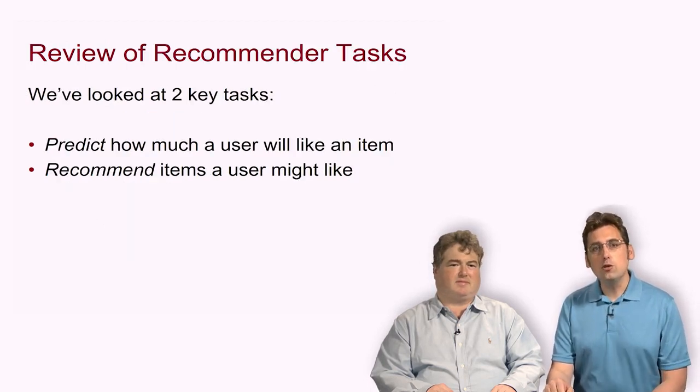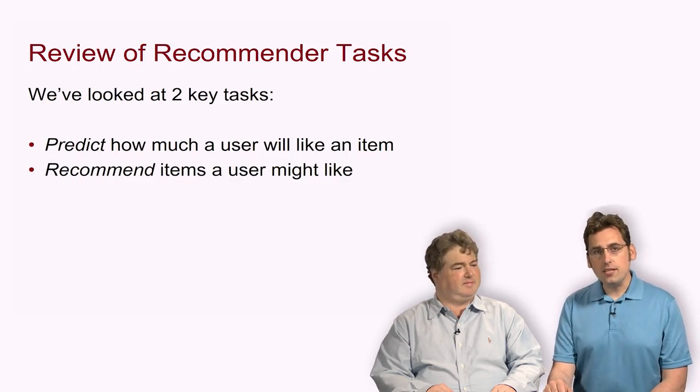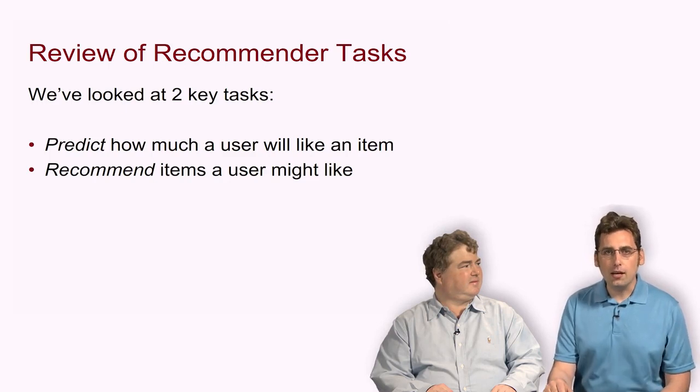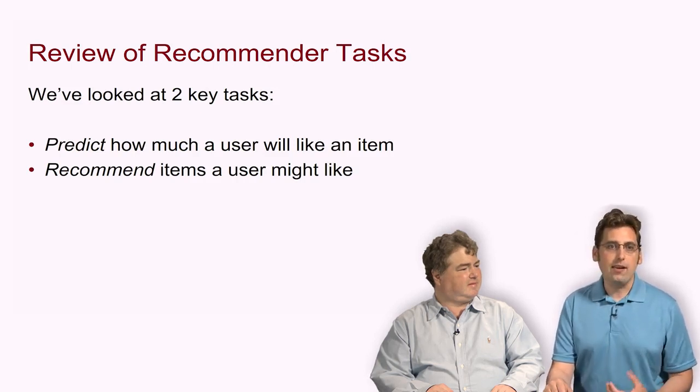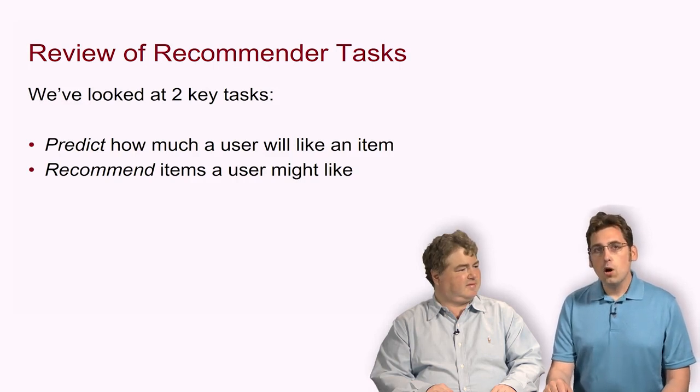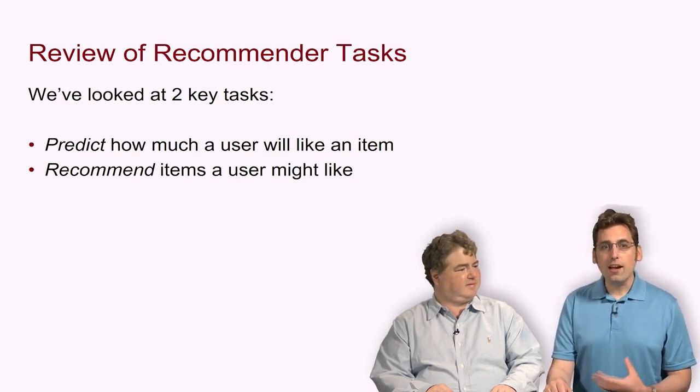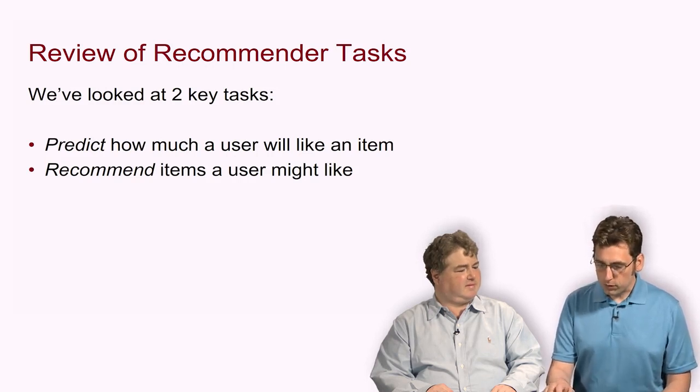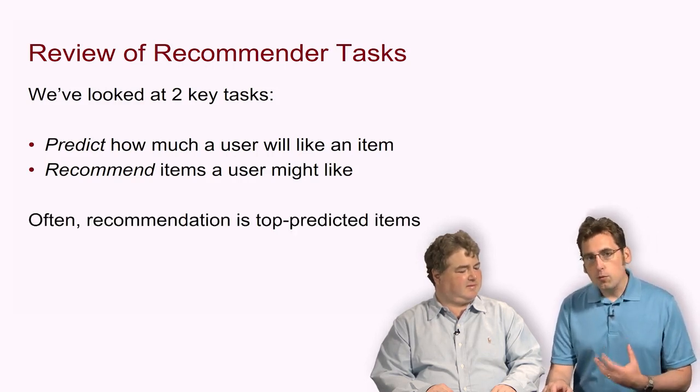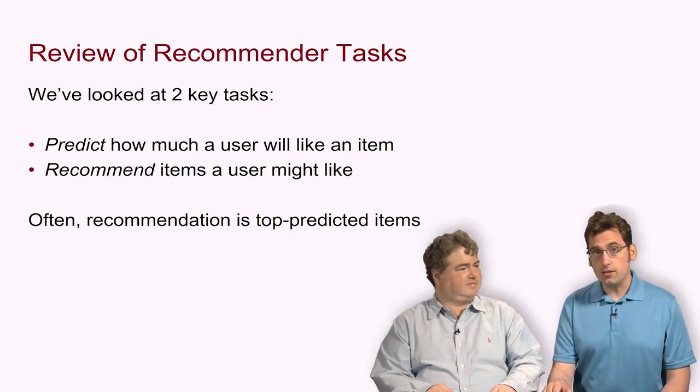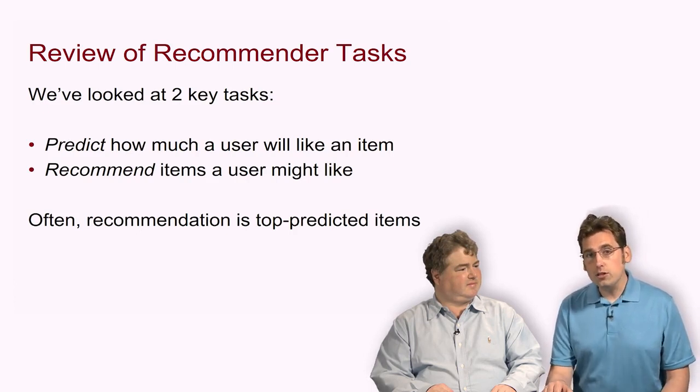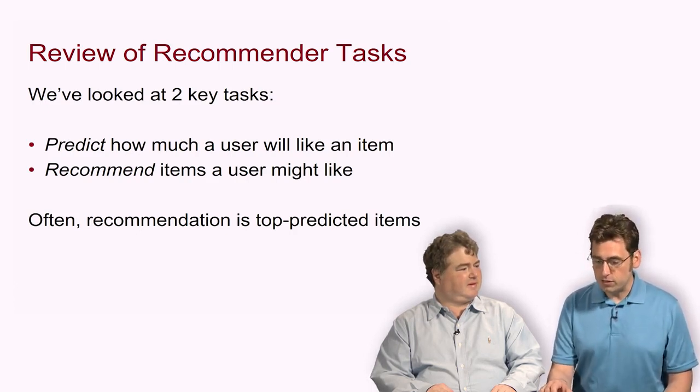We've looked at two key tasks for a recommender system. In the predict task, or more generally score, we try to predict how much a user is going to like an item. This might look like trying to predict their rating or estimating a probability of how likely they are to buy the item. And then there's the recommend task, where we try to produce a list of items that a user might like to purchase or consume.